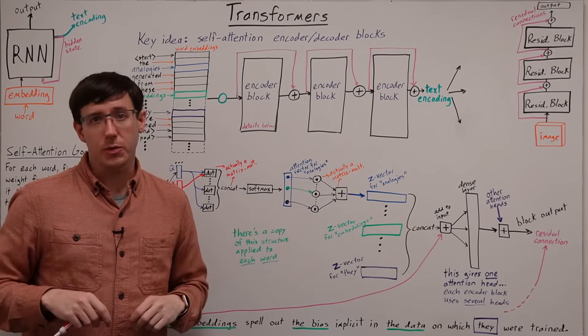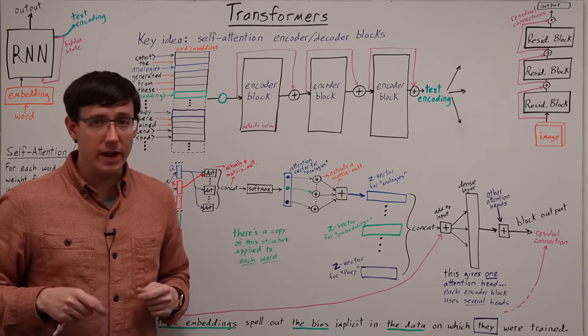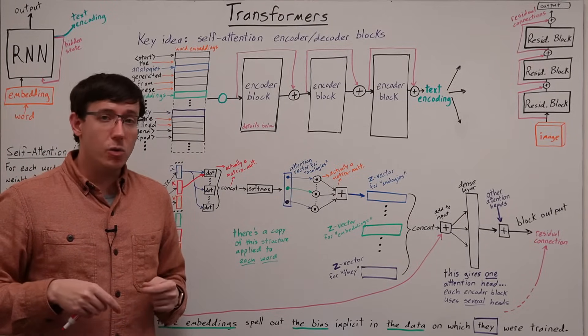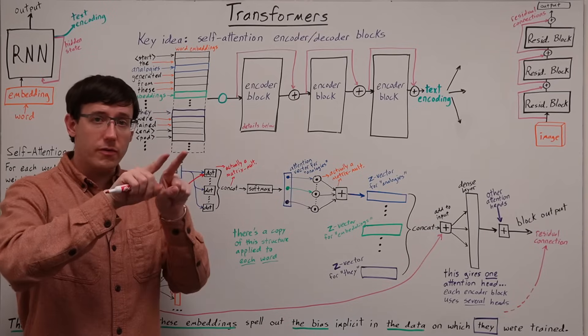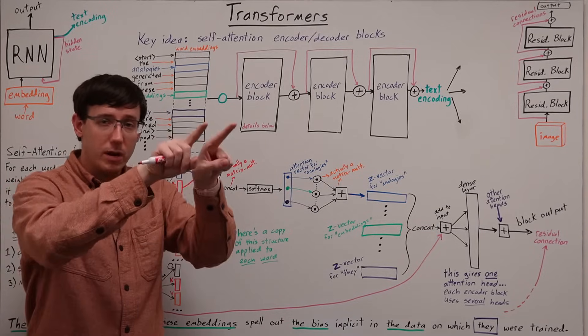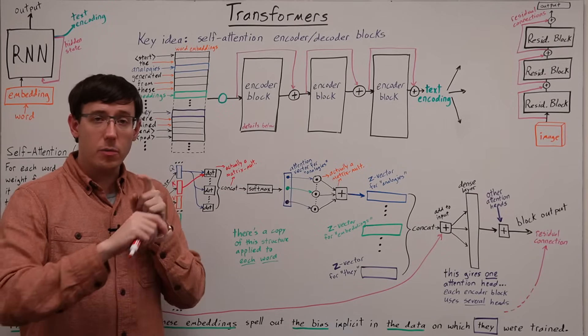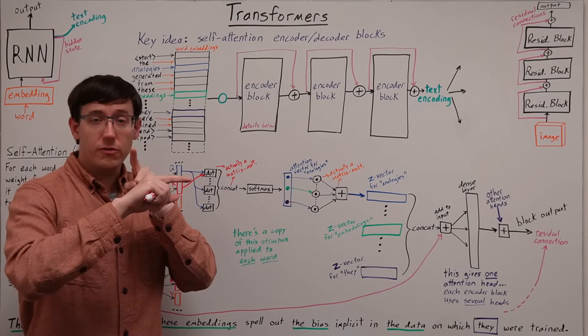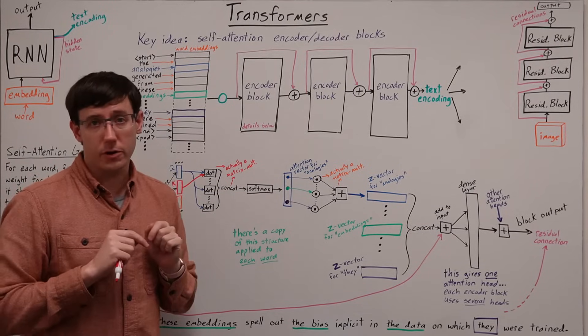As we know from linear algebra, when we take the dot product of two vectors, that value will be large if the vectors point in roughly the same direction, and the dot product will be small if those vectors point in very different directions.